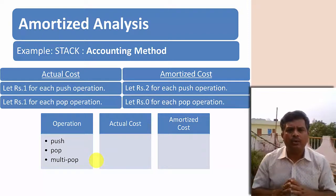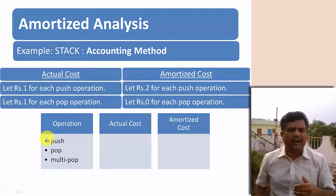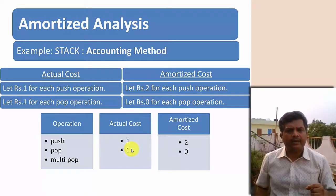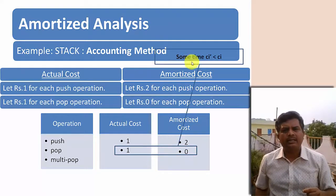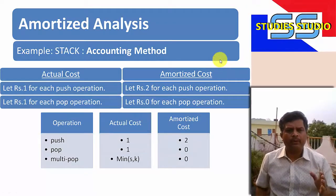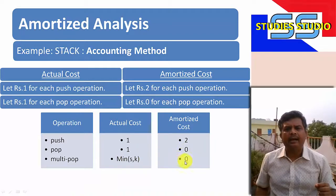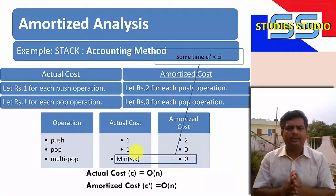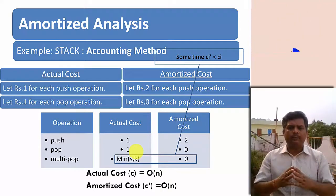We assign 1 rupee actual cost for push and 1 rupee for pop. The amortized cost is 2 rupees for each push operation and 0 rupees for each pop operation. For push: actual cost is 1, amortized cost is 2. For pop: actual cost is 1, amortized cost is 0 — here ci' is less than ci. For multi-pop: actual cost is min(s, k), amortized cost is 0. The actual cost c is O(n) and the amortized cost c' is also O(n).